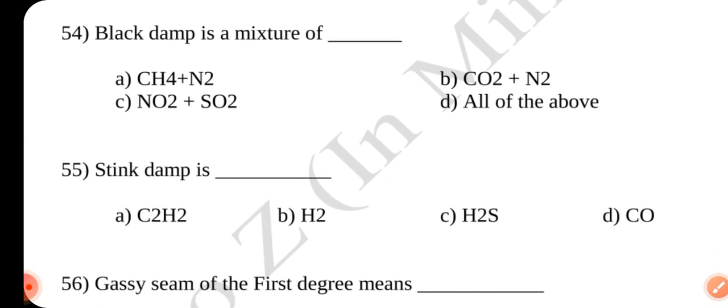Question number 54. Black dam is a mixture of dash. Answer is B CO2 plus N2.